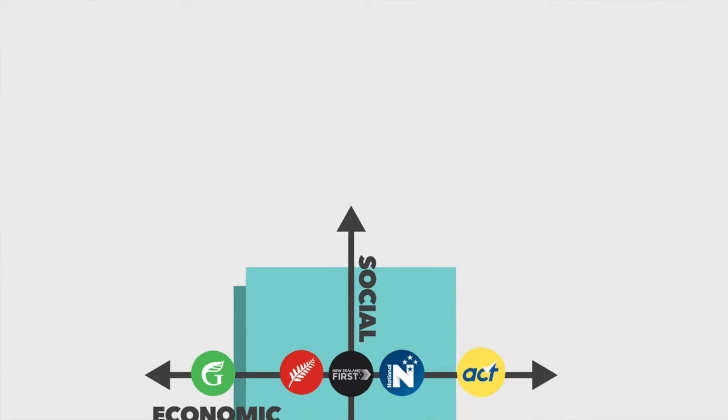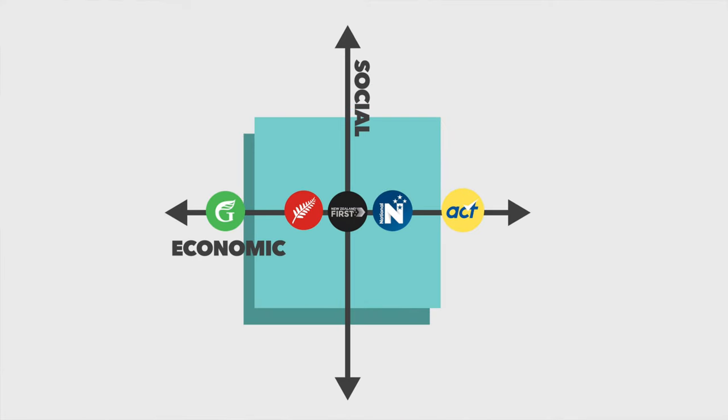Most of New Zealand's parties are all quite socially liberal. Even our more socially conservative parties are generally in favour of people being able to engage their rights and getting equality. The difference is just about how to get them. It means that even National and ACT, who are a bit more socially conservative, are quite liberal.